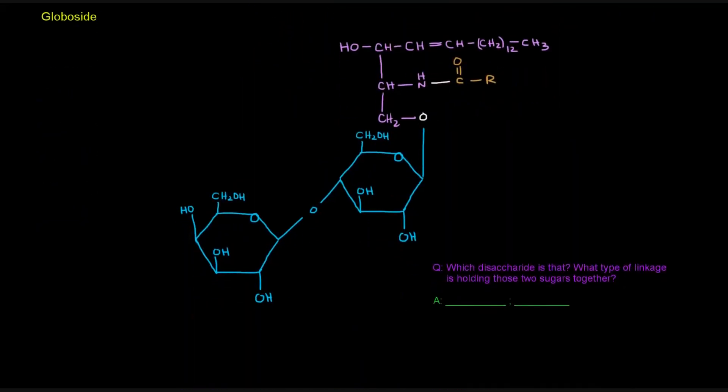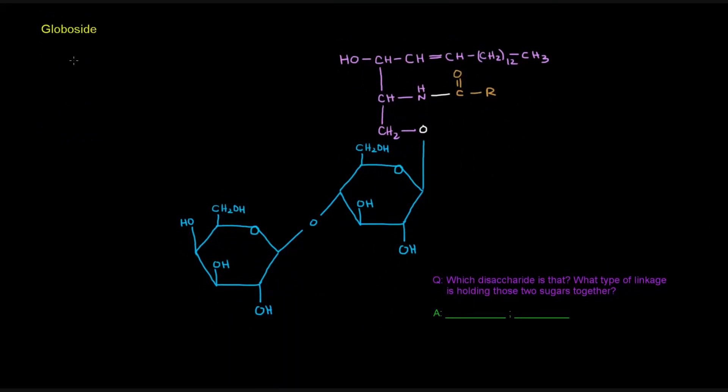Okay, globosides. Globosides could have two or more sugars attached to their polar head group, and they're also neutral. So these guys have an overall charge of zero, just like cerebrosides, because these are glycosphingolipids. Here, the polar head group is just these two sugars attached together.